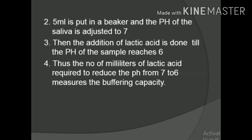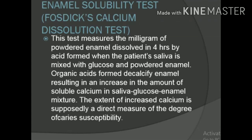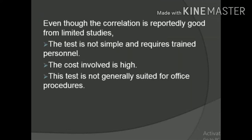The enamel solubility test — the Fosdick calcium dissolution test — measures the mg of powdered enamel dissolved in 4 hours by acid formed when patient's saliva is mixed with glucose and powdered enamel. The organic acids formed decalcify the enamel, resulting in increased soluble calcium. The extent of increased calcium is a direct measure of caries susceptibility. However, the test is not simple, requires trained personnel, has high cost, and is not generally suited for office procedures.